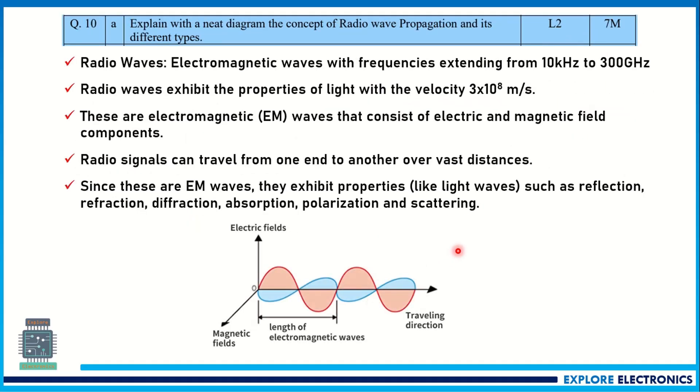Then question number 10. Here we need to explain the concept of radio wave propagation with the neat diagram and its different types. So first write what is radio waves, electromagnetic waves, and their frequency ranges, and then how they are going to travel. Like electromagnetic waves will be having magnetic fields, electric fields, and this is the traveling direction like that you need to explain.